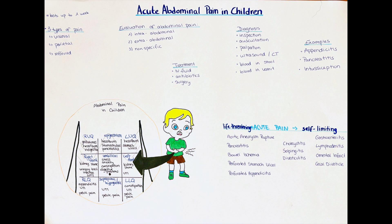In toddlers, the most common causes of blood in stool are anal fissure, infectious colitis, or juvenile polyps. In children aged two to six years, infectious colitis is most common, followed by anal fissures and intussusception. In children six years and older, inflammatory bowel disease is the most common cause, followed by polyps and hemorrhoids. For blood in the vomit, newborns most commonly ingest maternal blood, while in toddlers and children aged 2 to 12 years, ulcers, gastritis, and esophagitis are the leading causes.